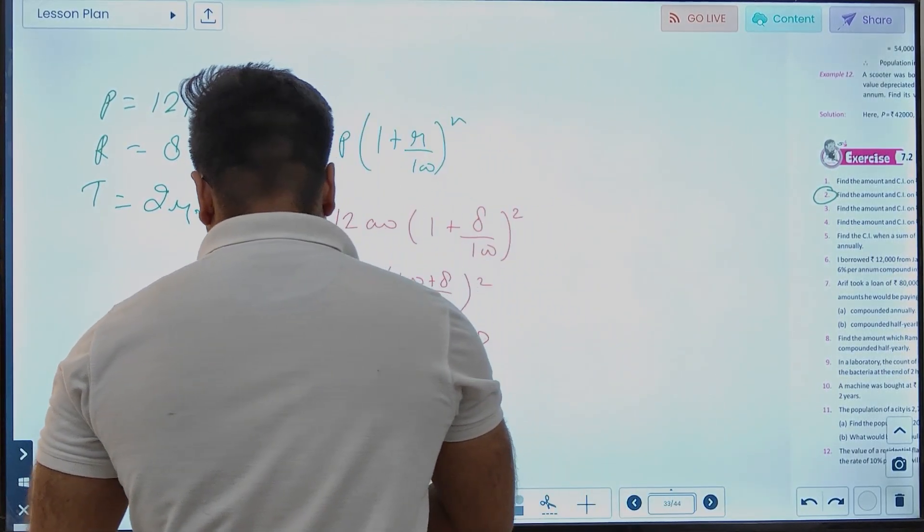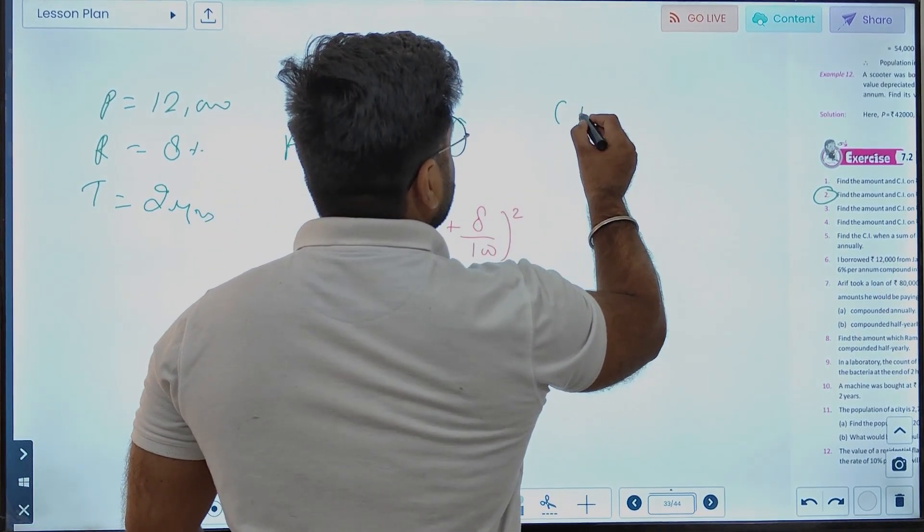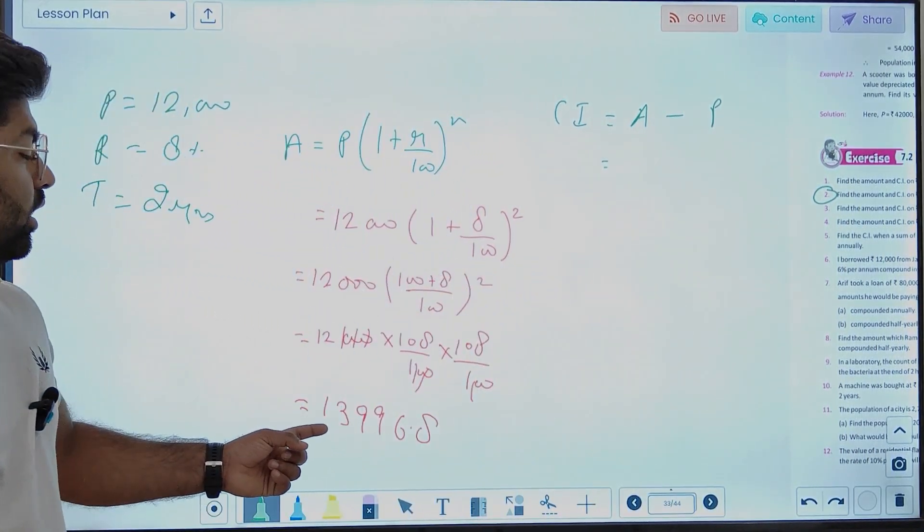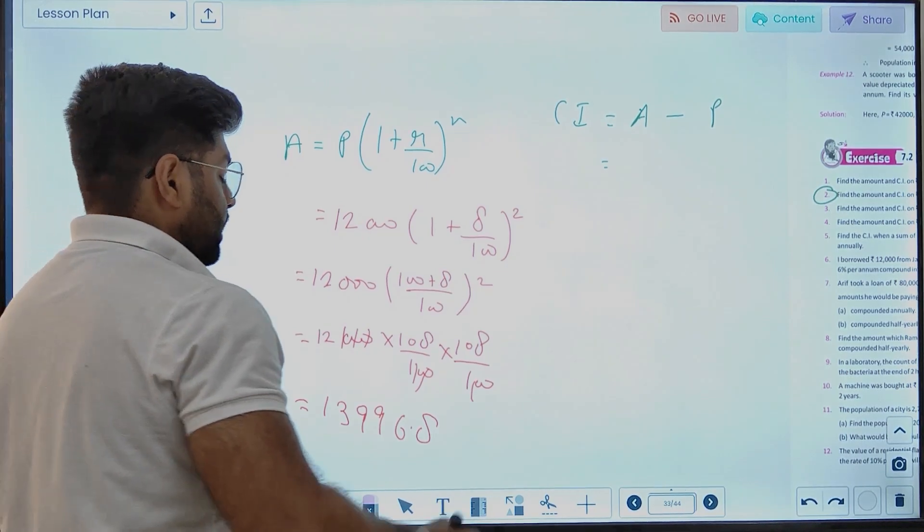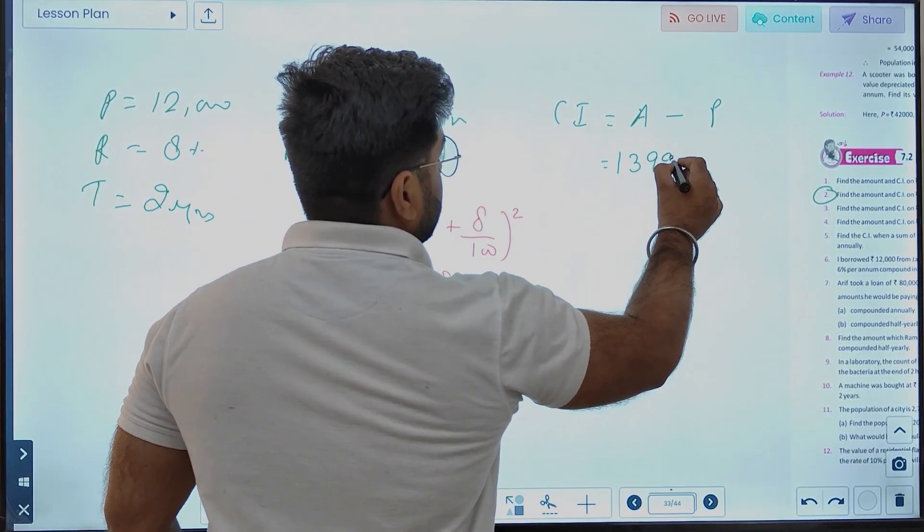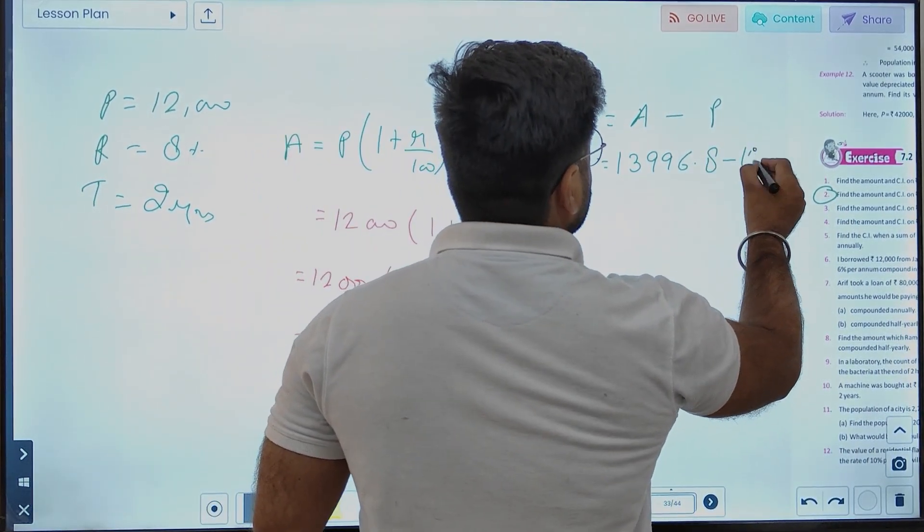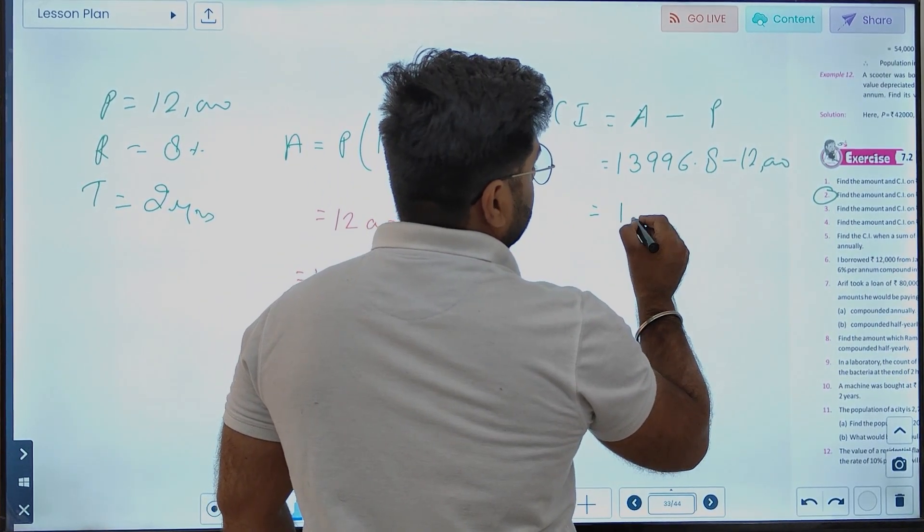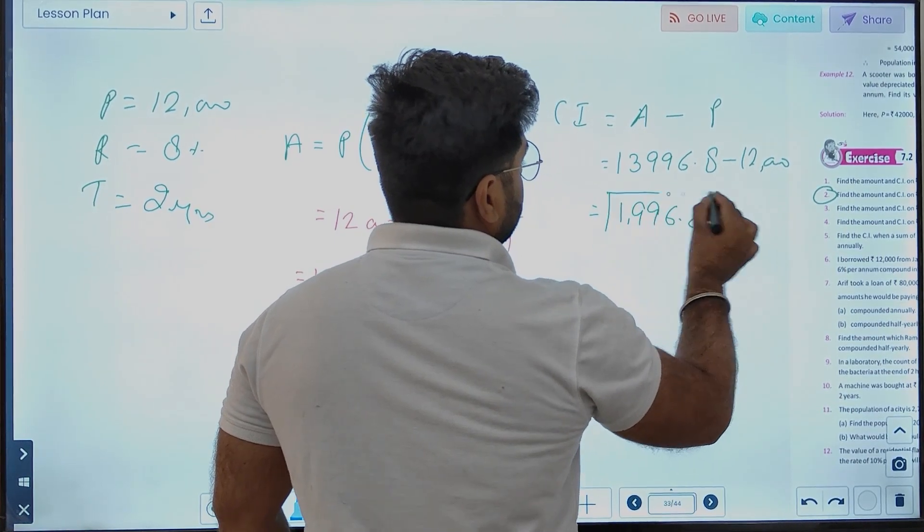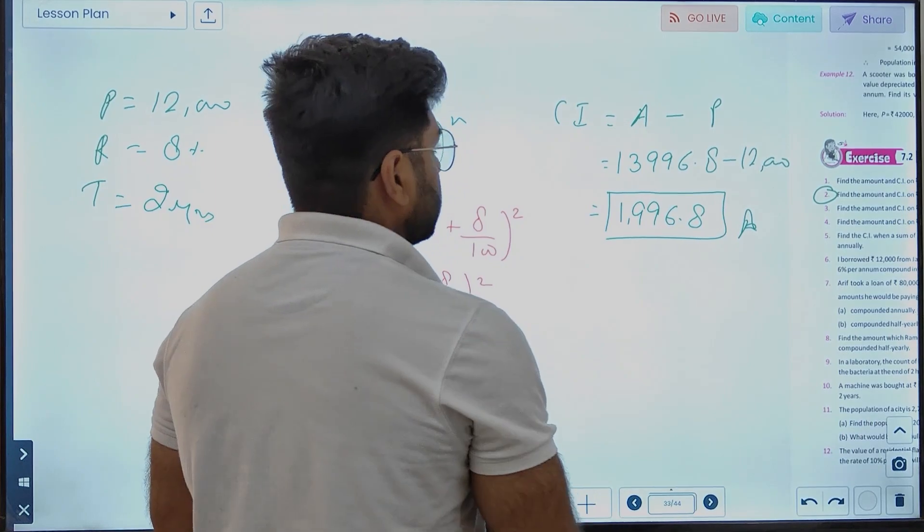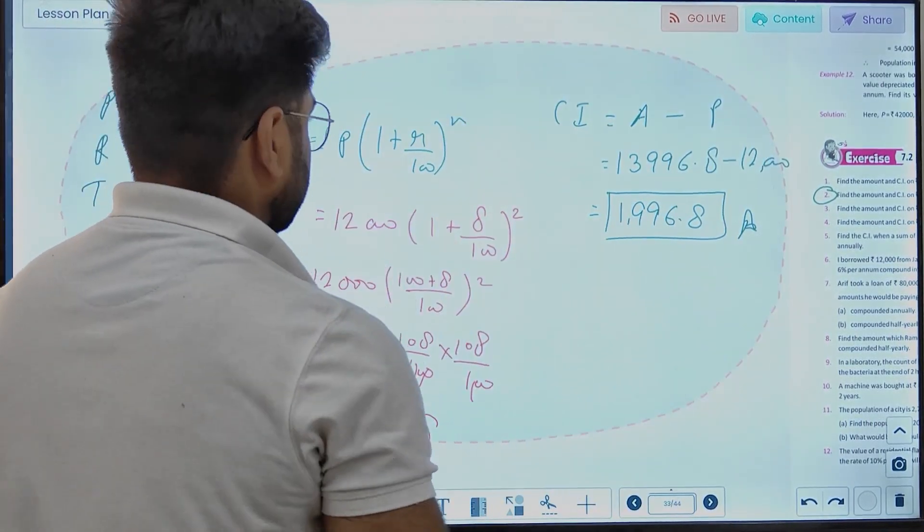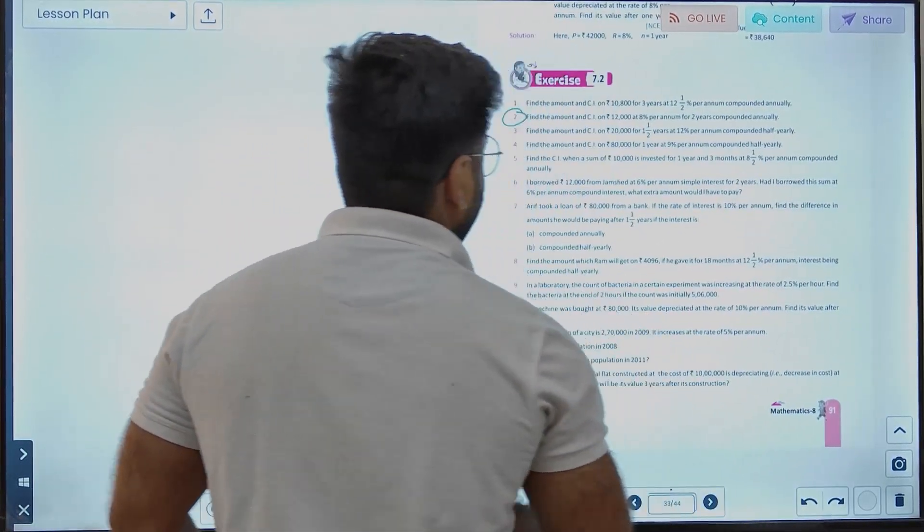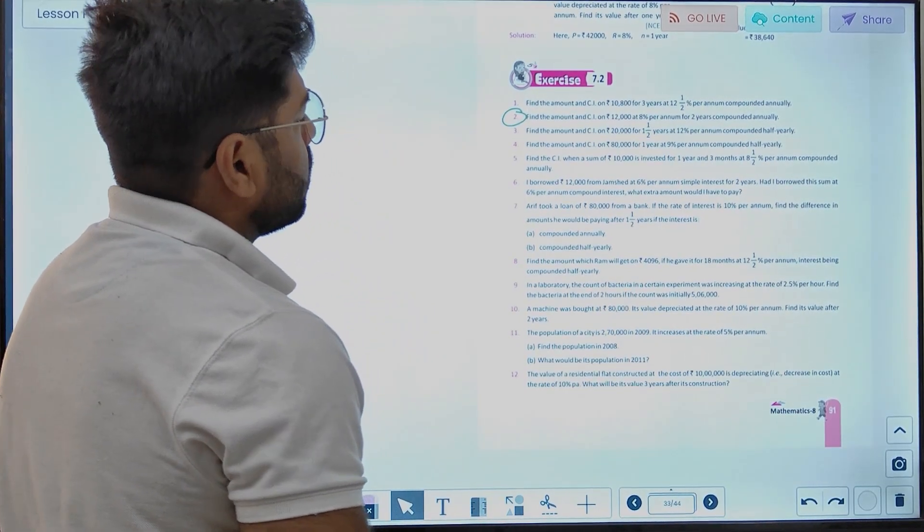Now we calculate compound interest. Compound interest equals Amount minus Principal. That's 13,996.8 minus 12,000, which equals 1,996.8 rupees. That's the answer.